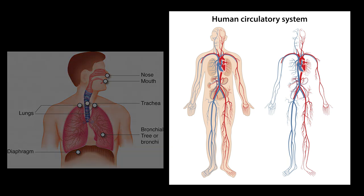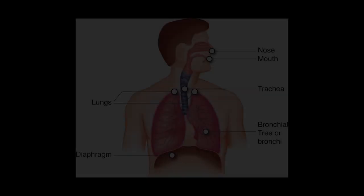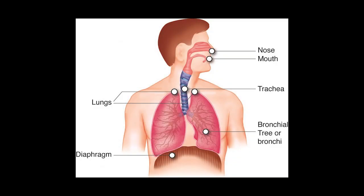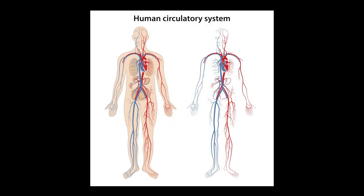Let's start with some background information. The respiratory system mainly consists of the mouth, trachea, lungs — which contain bronchial tubes and alveoli sacs — and lastly the diaphragm. The circulatory system mainly consists of the heart, arteries, capillaries, and veins.